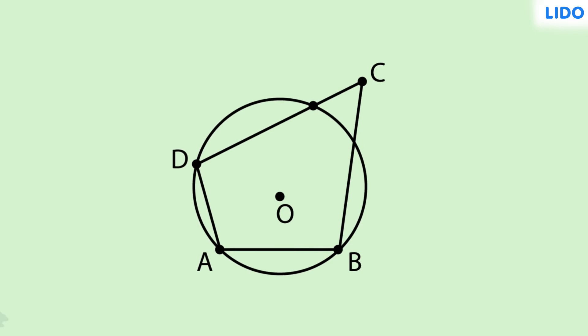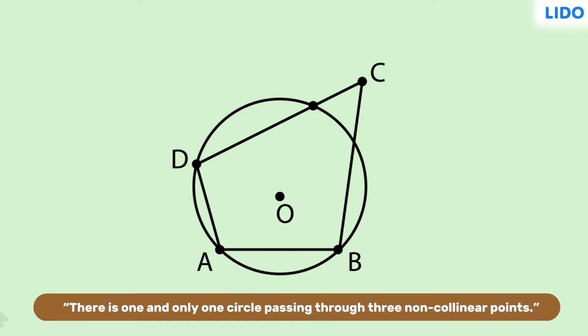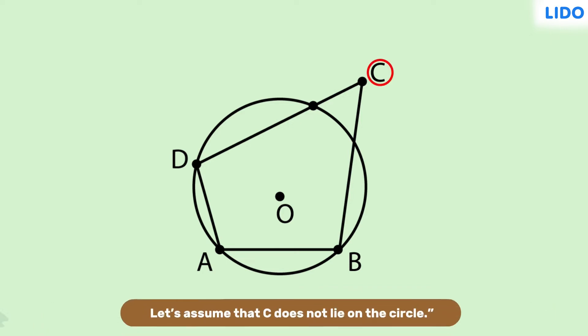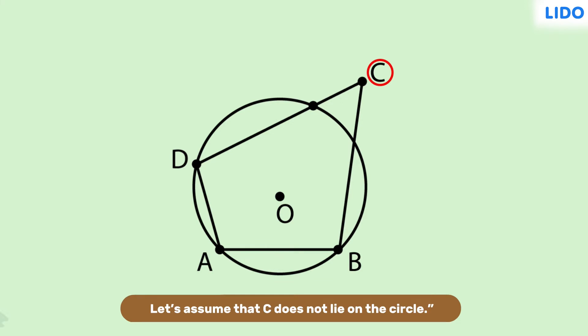Next, we consider three of these four points, say A, B, and D, and a circle through them. We can do that because we know that through three non-collinear points, we can draw a unique circle. For the rest of the proof, we will use contradiction. That is, let's assume the vertex C does not lie on this circle. So let's name this point where the circle intersects the ray CD as C dash.